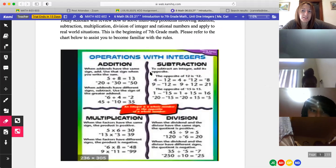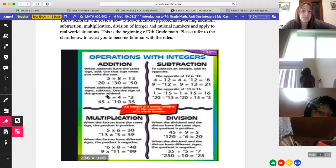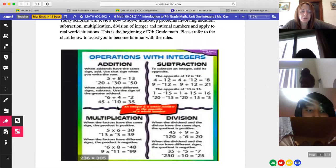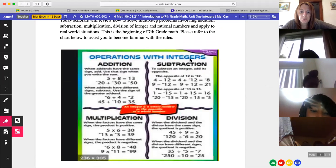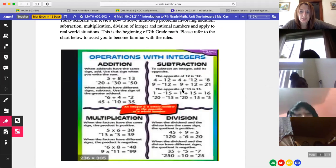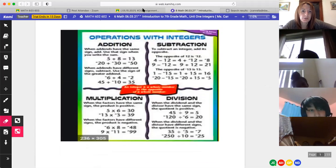This is the beginning of seventh grade math. Please refer to the chart below to assist you to become familiar with this rule of math. Great. So let's review. There are four operations in math. When you're adding and the signs are the same, you just keep the sign and add. So if you have two positives, it's positive and add. If it's two negatives, you take the negative and add.